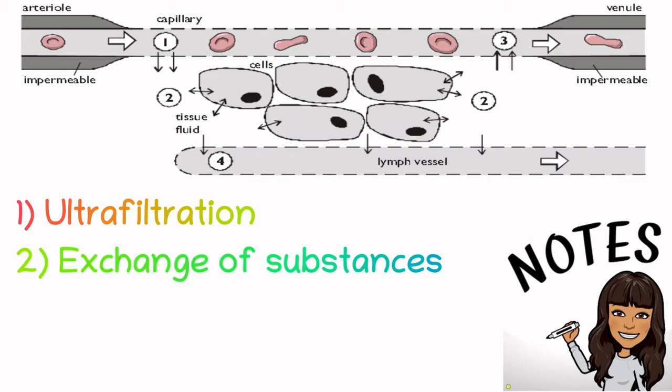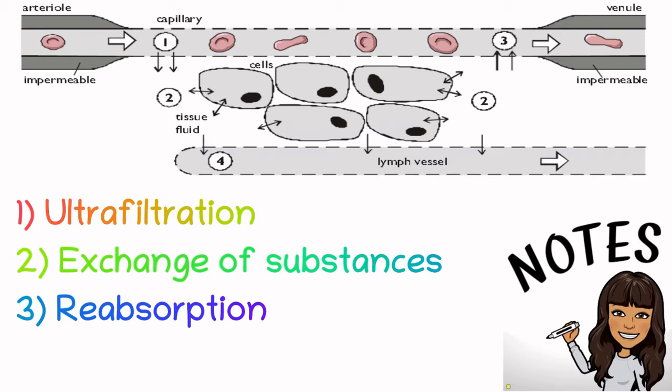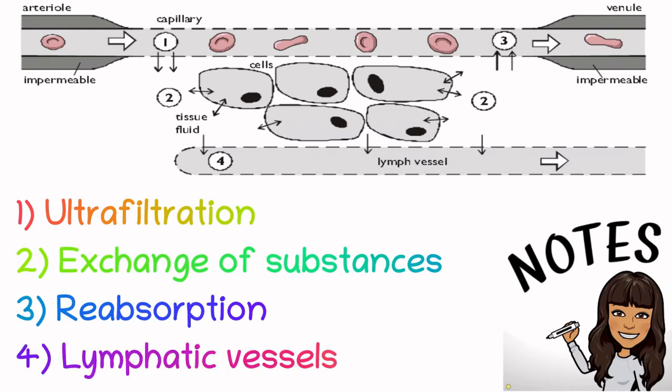About 90% of the fluid that leaked out will go back into the circulatory system in this way — this is known as reabsorption. Point four on the diagram shows the close association with the lymph vessel. The remaining 10% left in the tissues is drained into the lymphatic system and will eventually re-enter the blood at the superior vena cava.